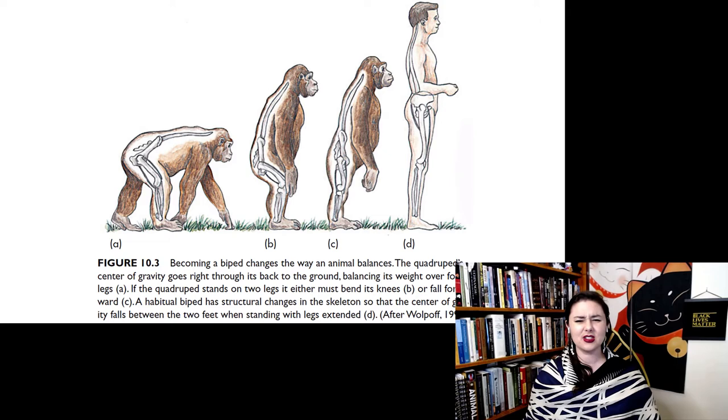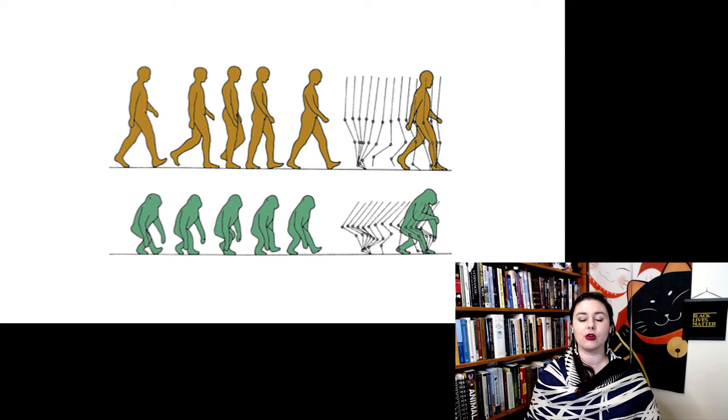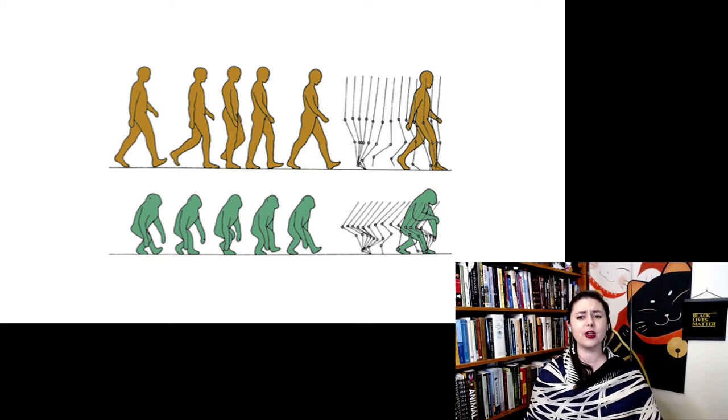That means they have to do this really awkward walk. So we can compare how a human walks on two feet versus how a chimpanzee walks on two feet. And our walk is very easy. We go from kind of swing from one leg to the other and our legs stay relatively long throughout this process.